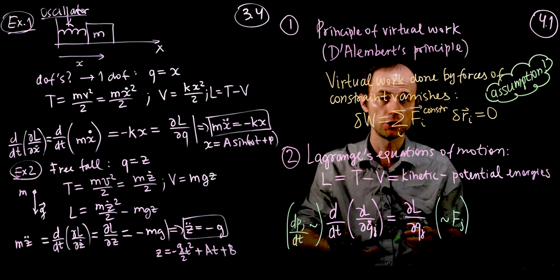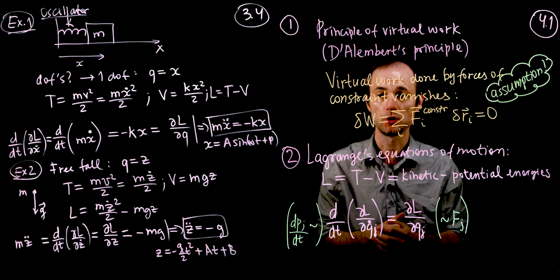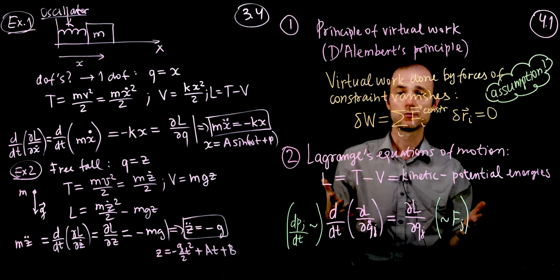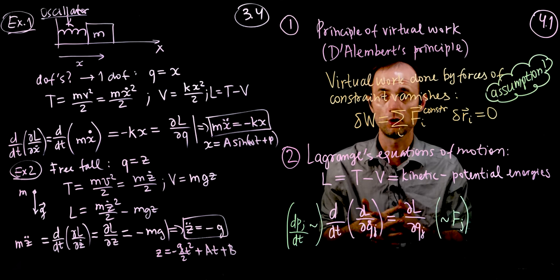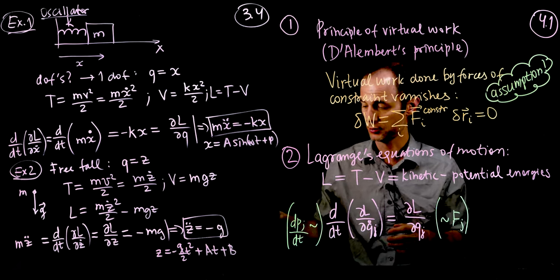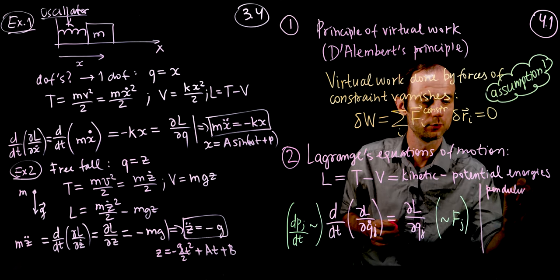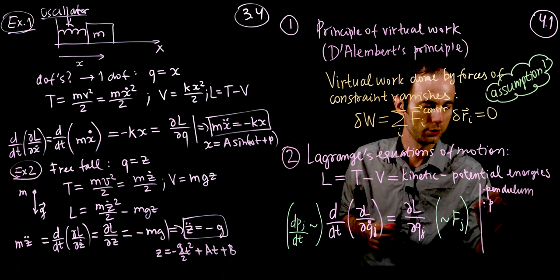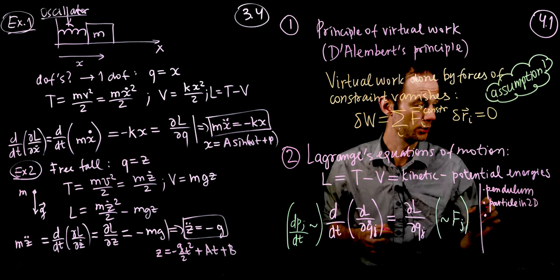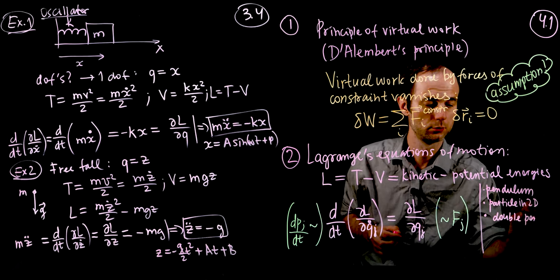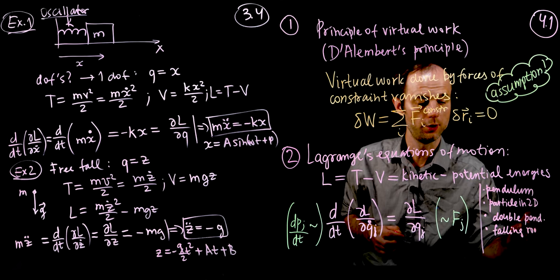So this is dp/dt — mass times acceleration for a single particle — and on the right-hand side, this is a force. Let's now make use of these equations of motion on a bunch of examples. We already considered a particle on a spring and freefall. Today we're going to consider a pendulum, a particle in 2D in polar coordinates, a double pendulum, and we'll wrap it up with a falling rod on a frictionless table.